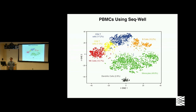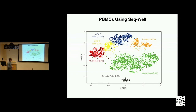Once we had used cell lines — just big bags of RNA basically — we thought we would make it a little bit more challenging, something that would more closely approximate an actual clinical sample. We decided we would use PBMCs from a healthy donor. When we applied them to a SQL device, we were able to identify the types of cells we would expect from PBMCs: monocytes, dendritic cells, NK cells, and different types of T and B cells.